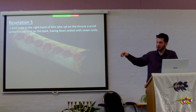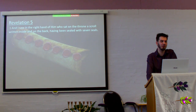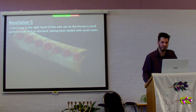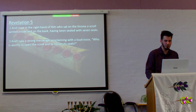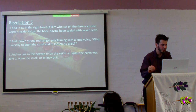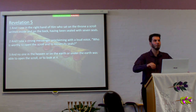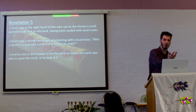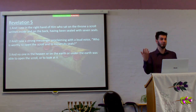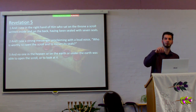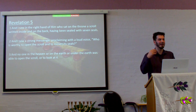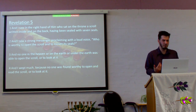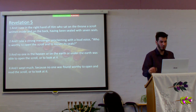Now in Revelation — this is why I've used this picture as a background — 'I saw in the right hand of him who sat on the throne a scroll written inside and on the back, sealed with seven seals. And I saw a strong messenger proclaiming with a loud voice: Who is worthy to open the scroll and to loosen its seals? And no one in the heaven or on the earth or under the earth was able to open the scroll or to look at it.' Now when the Ketubah had three copies, who was allowed to open the one at the judicial court? You had to be a judge; you had to have authority. And I wept much because no one was found worthy.